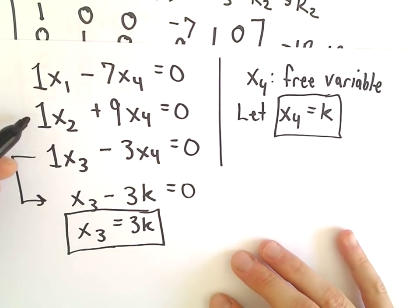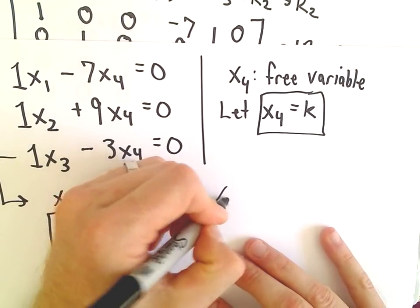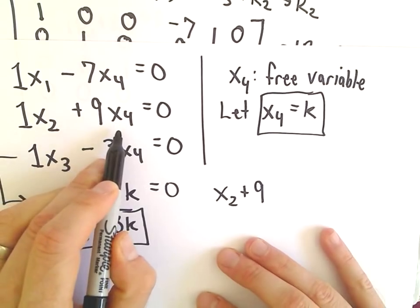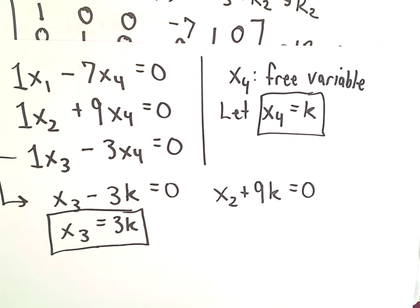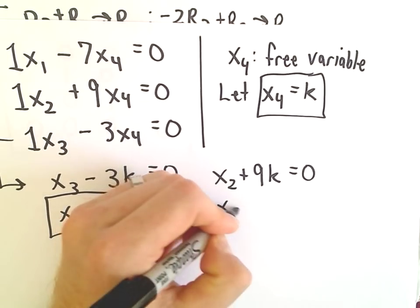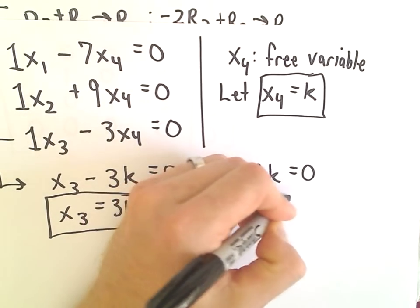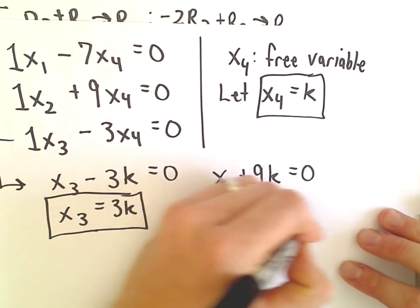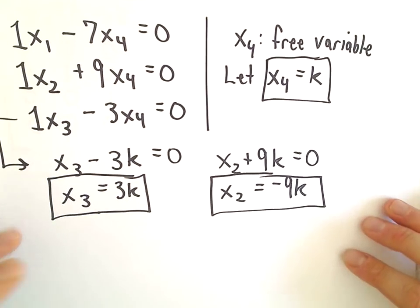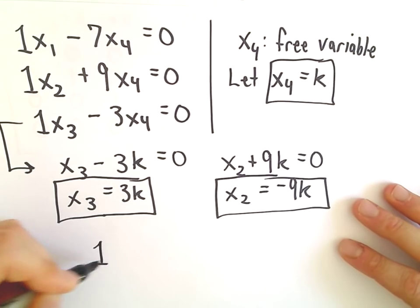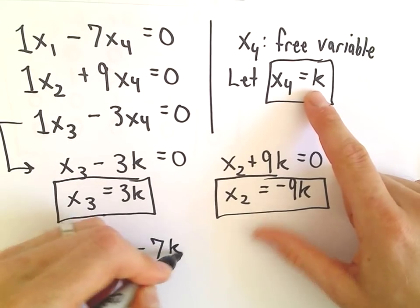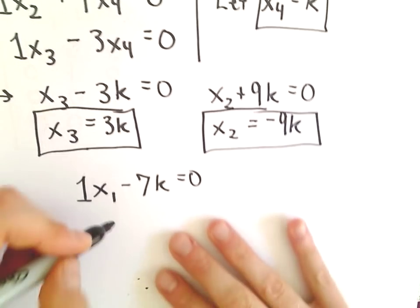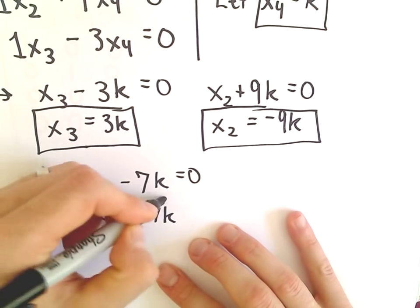Now I'm going to take my second equation. So it says we have 1x sub 2 plus 9 times x sub 4, which, again, is just k. That's going to equal 0. So in this case, it says that x sub 2 is going to equal negative 9k. And last but not least, if we take our first row, it says we have 1x sub 1 minus 7x sub 4, again, which is k. And if we solve, it says that x sub 1 is going to equal 7k.